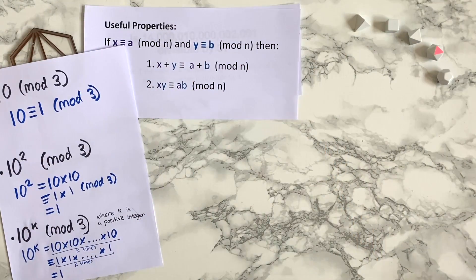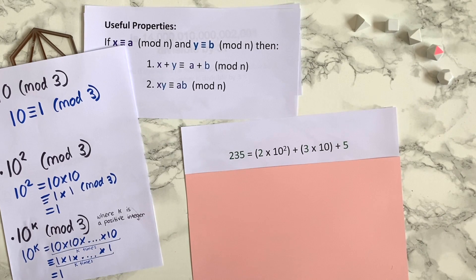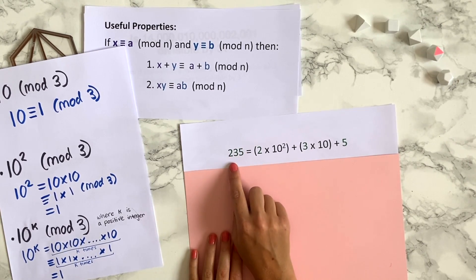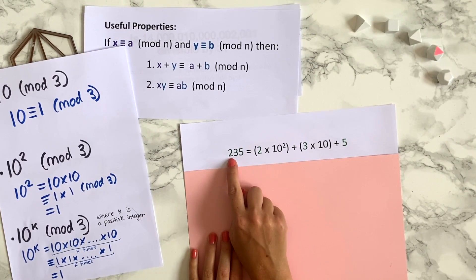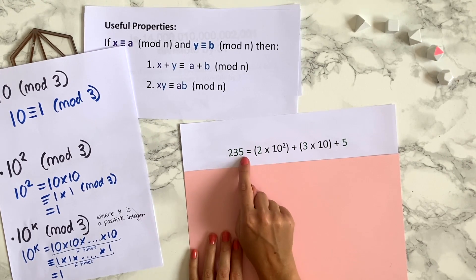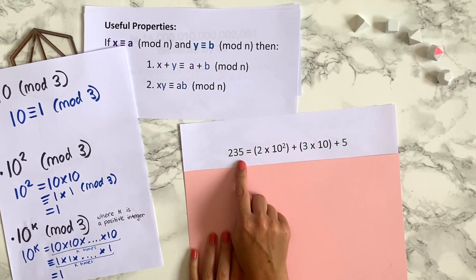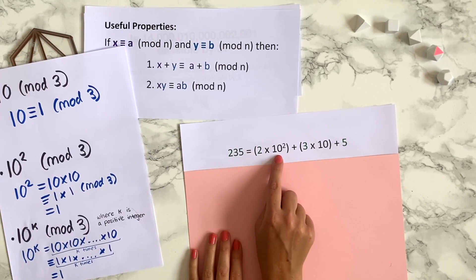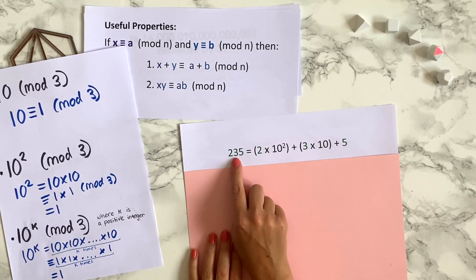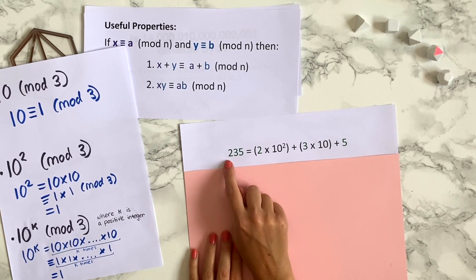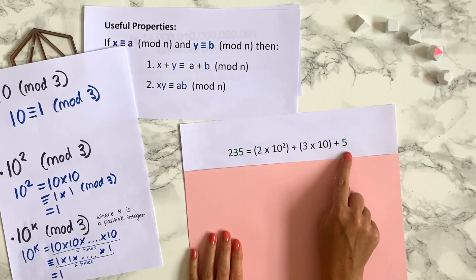The next thing I want to think about before proving our theorem is writing numbers in expanded form. Take the number 235. This number consists of two hundreds, three tens, and five units. So we can break this up: 235 is the same as 2 lots of 100 — where 100 is 10 squared — plus 3 lots of 10, plus 5 at the end. So 235 is the same as doing this calculation.